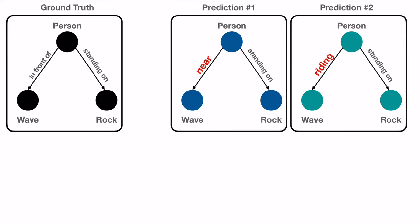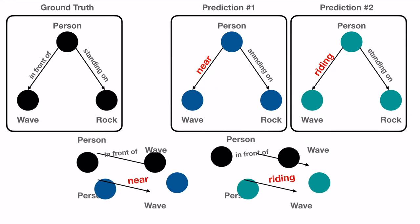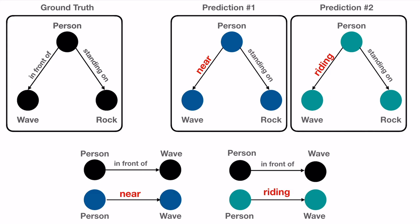A cross-entropy-based method that considers the relationships independently will assign nearly equal values of loss for either relations. However, looking at the graph we can deduce that near is a far more likely relationship between person and wave than riding given that the person is standing on a rock.